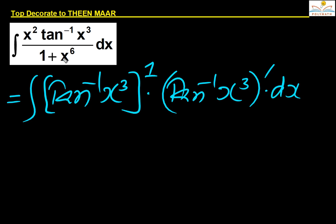It is there: 1 upon 1 plus x power 6, into x cubed derivative of 3x squared. x squared is there, 3 is missing, so divide by 3.